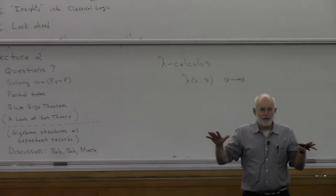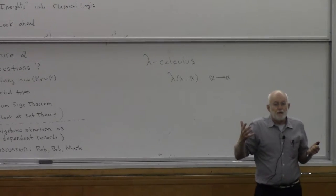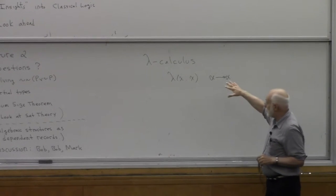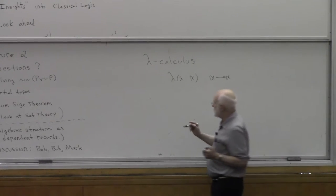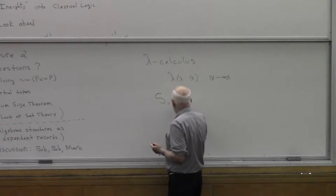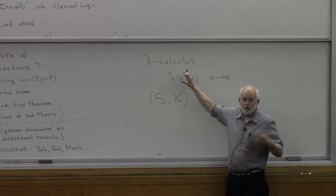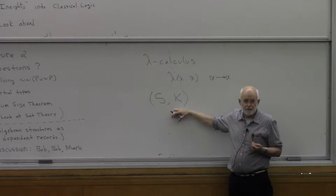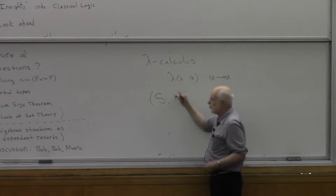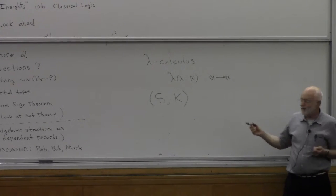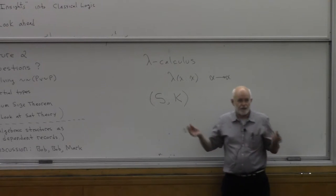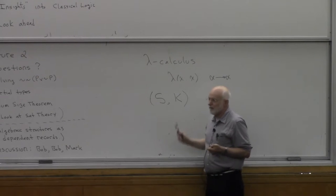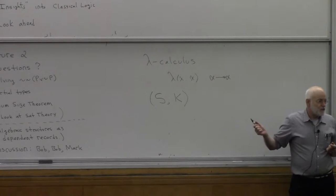We want to start with the untyped calculus. It can do all kinds of amazing things — you can define natural numbers, the Church numerals, the fixed point operator. Curry was doing it all with his combinators too. The SK combinator base is enough to define all the lambda terms — that's one of the universal bases. The beauty of combinators is they don't have bound variables — they have free variables but no bound variables — so you don't have to worry about renaming, alpha conversion, capture, and all that.